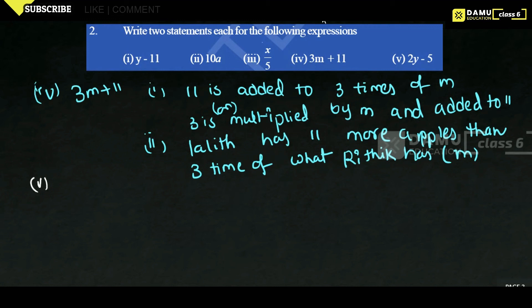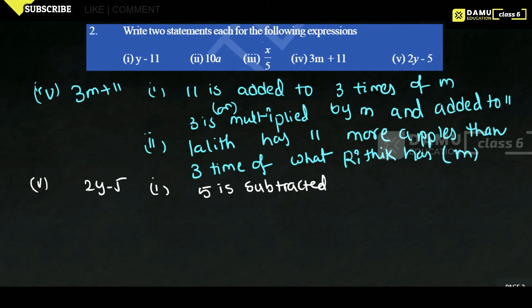The fifth expression is 2y minus 5. First statement: '5 is subtracted from 2 times of y.' Second statement: '2 times of y is reduced by 5.'